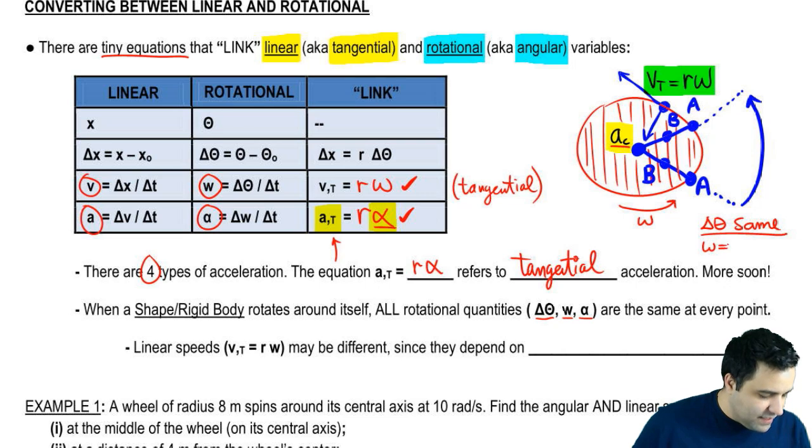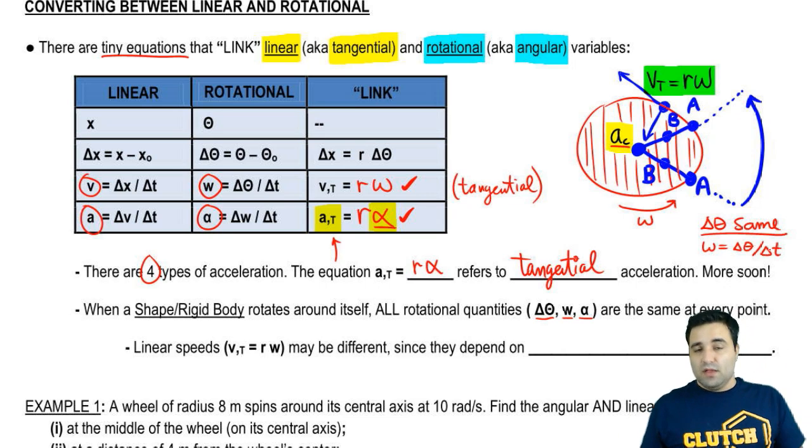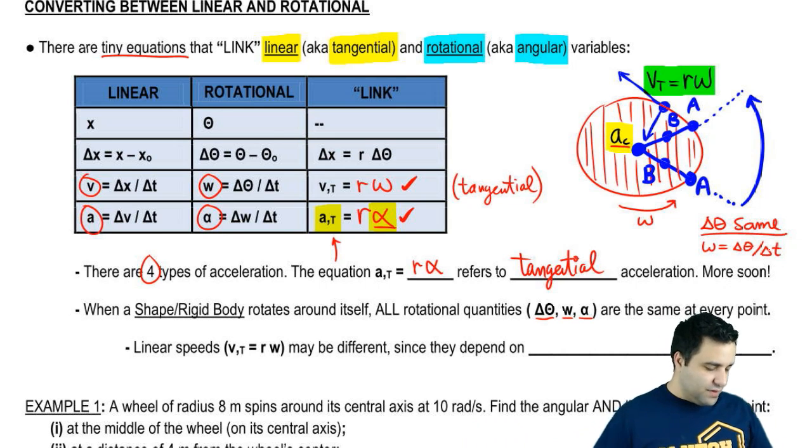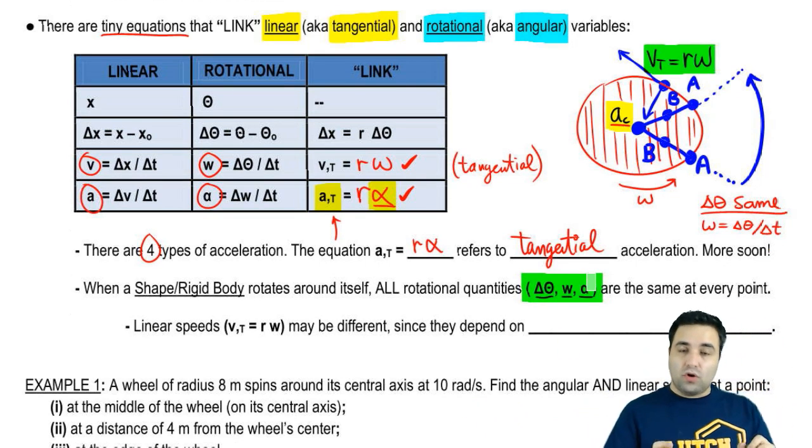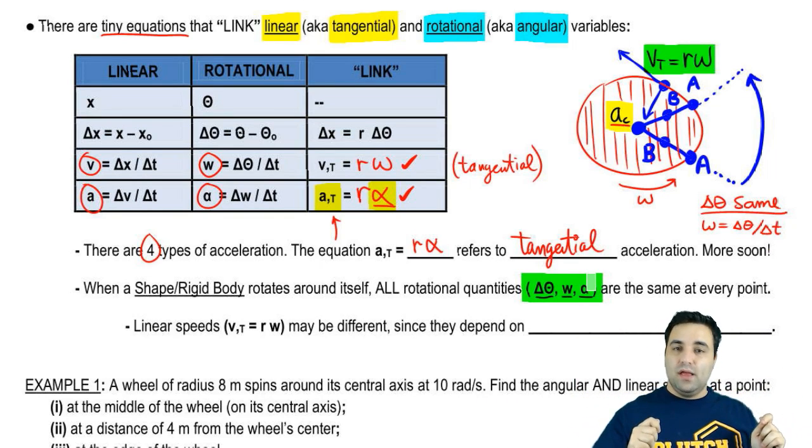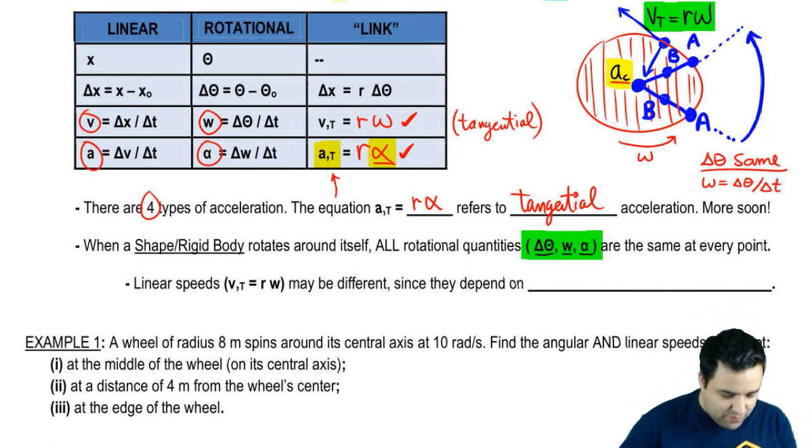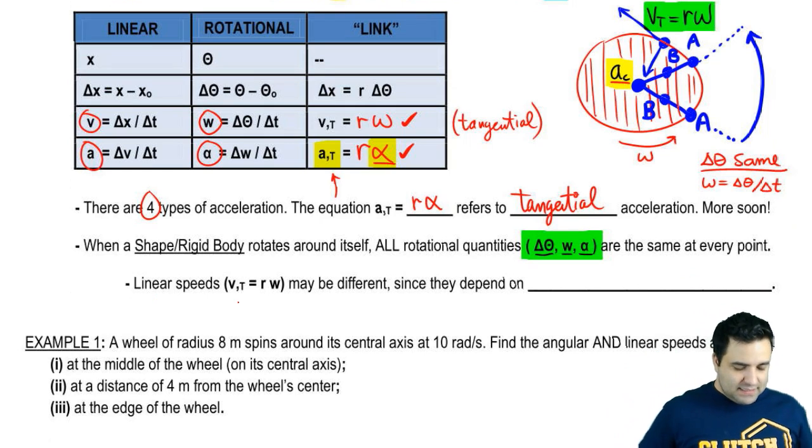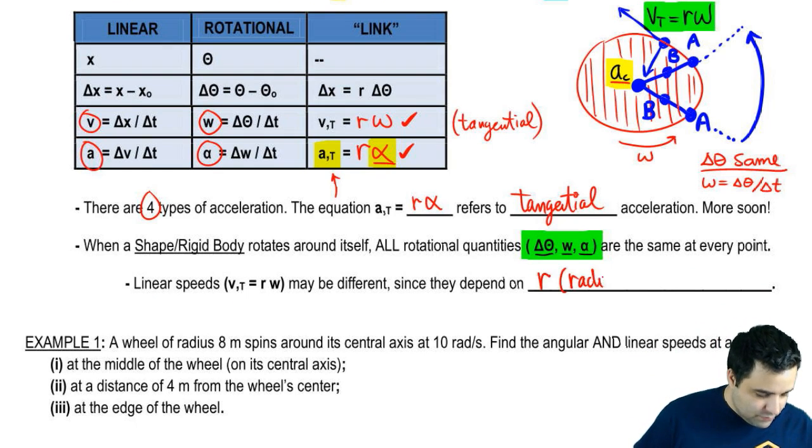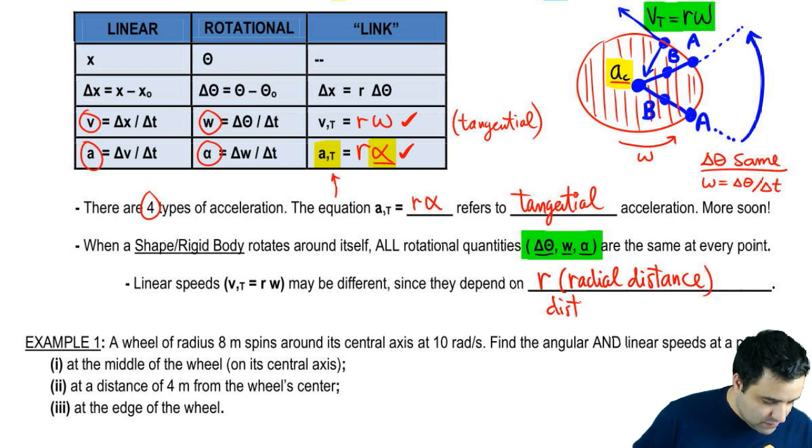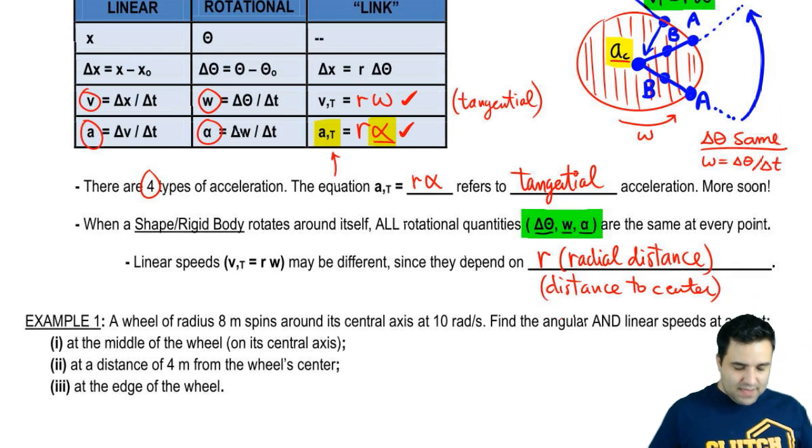Delta theta is the same. And because omega is defined in terms of delta theta, delta theta over delta t, omega is also going to be the same. And since omega is the same, alpha depends on omega, all these three things are the same. Long story short, if you're in a circle, all the objects on top of a circle have the same delta theta as they move. They're going to experience the same alpha and the same omega. So all of the rotational quantities will be the same. However, the linear speeds might be different since they depend on R, which is radial distance, or distance to the center. They might be different.